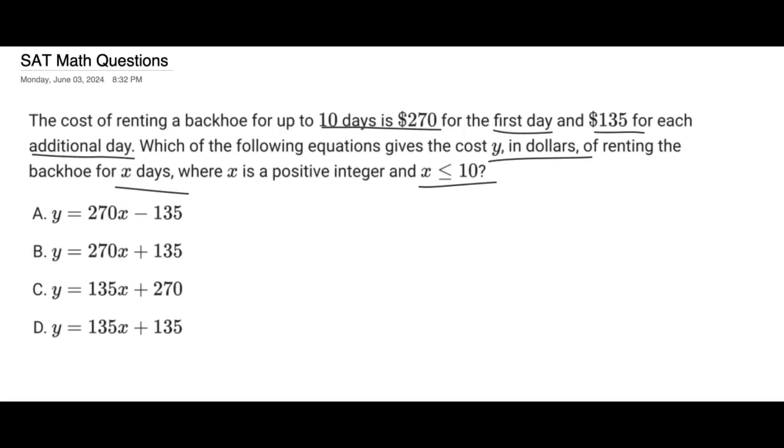Alright, so let's look at our options here, and the first one I want to cross out is C. Because C seems like the obvious answer, since you start off with $270 on the first day, and then it costs $135 for each additional day. So you might think that it's 135X as a slope, which it is, but there is something else you have to consider.